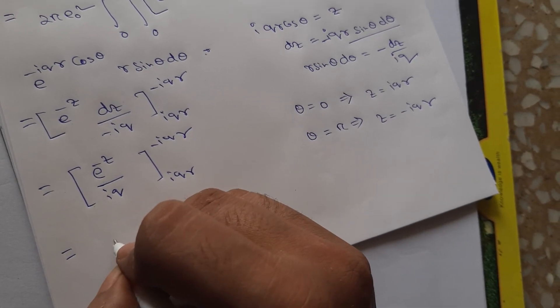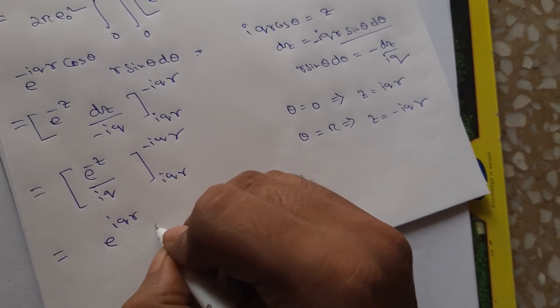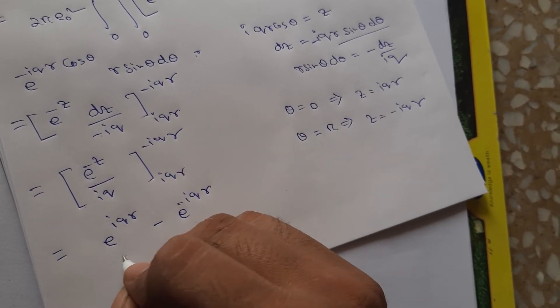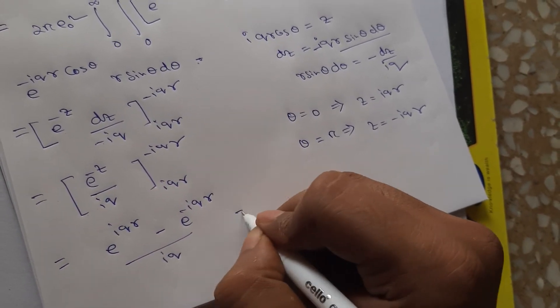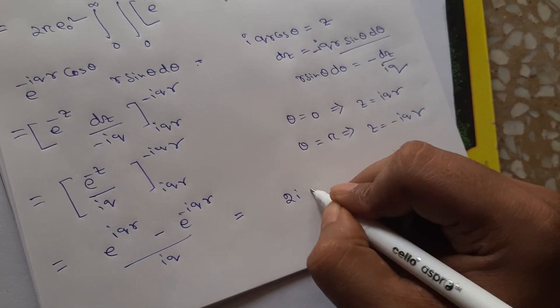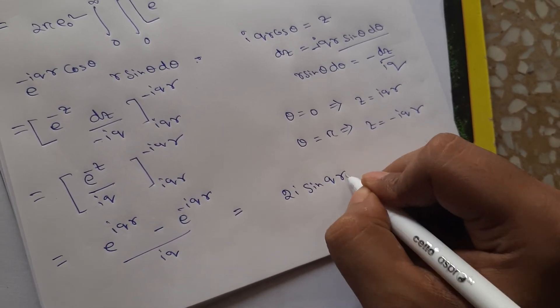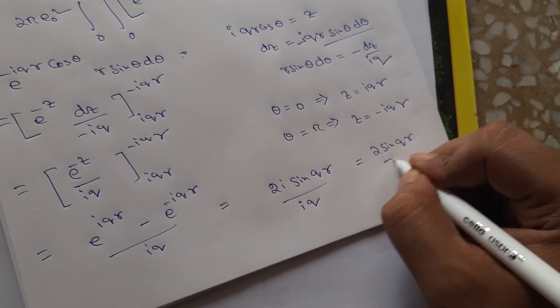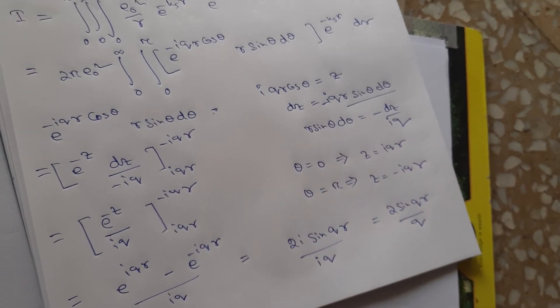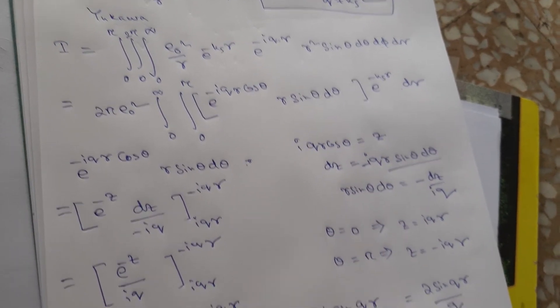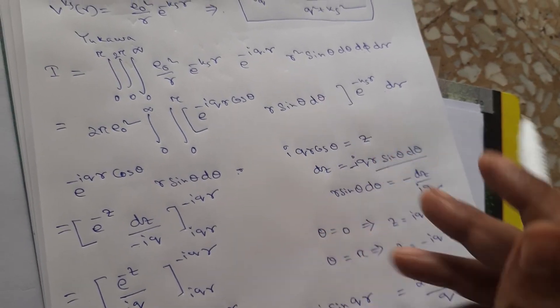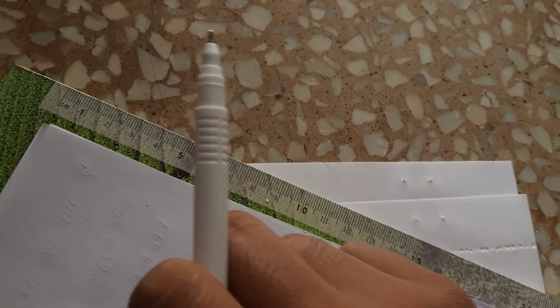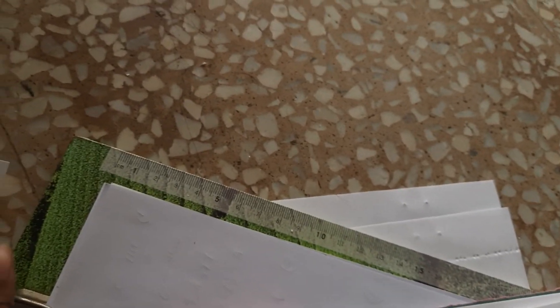This expression is nothing but 2 sin(qr) divided by q, using the definition of sine in terms of complex exponentials.